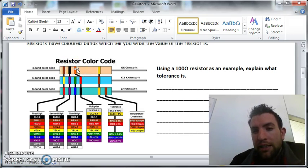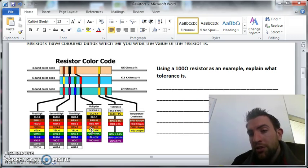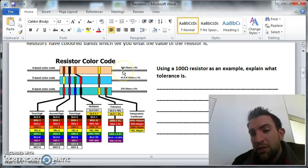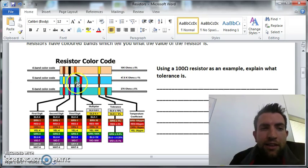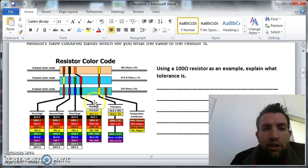On a four-band resistor, the third band is the multiplier. This one is orange, so you multiply the first two digits (one and zero) by one thousand, giving you a resistance of 10,000 ohms. On a five-band resistor, the third one is another digit instead of a multiplier.